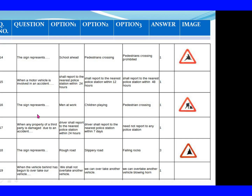Question 117: When any property of a third party is damaged due to an accident. Option 1: Driver shall report to the nearest police station within 24 hours. Option 2: Driver shall report to the nearest police station within 7 days. Option 3: Need not report to any police station. The right answer is Option 1: Driver shall report to the nearest police station within 24 hours. Question 118: The sign represents. Option 1: Rough road. Option 2: Slippery road. Option 3: Falling rocks. The right answer is Option 3: Falling rocks.